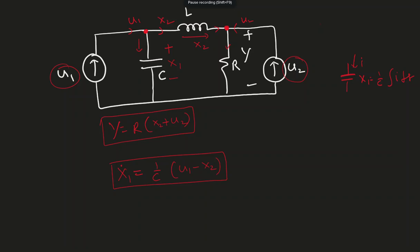We don't need to modify anything. I am going to rewrite this. X1 dot equals negative 1 over C X2 plus 1 over C U1.